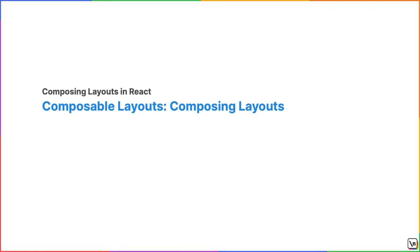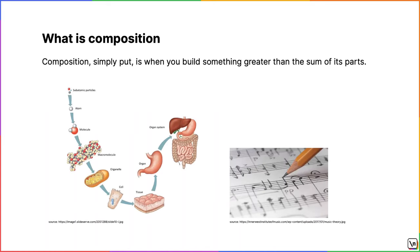Today we're going to talk about actually composing layouts. So what is composition? Composition, simply put, is when you build something greater than the sum of its parts. For example, an organism is composed of organs, composed of organ parts, which are composed of cells, which are composed of atoms. A musical composition can be broken down to nothing more than masterfully applying rhythm and tempo to 12 unique notes. Composition also applies to web layout. Complex layouts can be broken down into simpler layout primitives, as described by Hayden Pickering. These layout primitives are single-purpose layout components that do one thing and one thing well. It is by strategically combining these primitives that we build more complex layout structures.